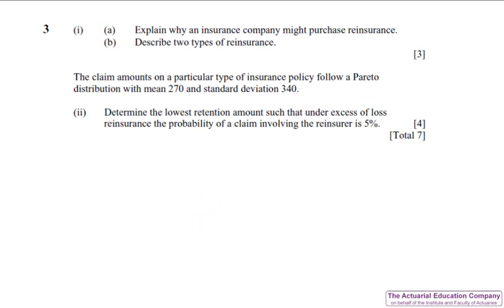Question three tests reinsurance. And this is a gorgeous question. Part one is simple book work, and part two is the number crunching. This year it's on the Pareto distribution. We're asked to determine the lowest retention amount, so that only 5% of claims involve the reinsurer. So we simply have to calculate the value of the retention m, such that the probability is only 5%. This would have presented absolutely no problem whatsoever.